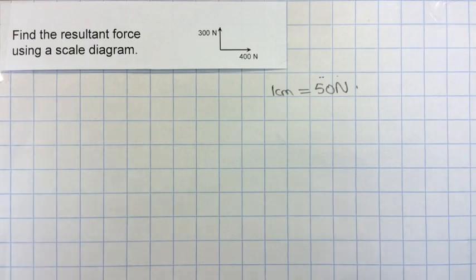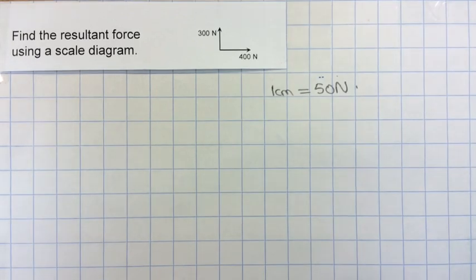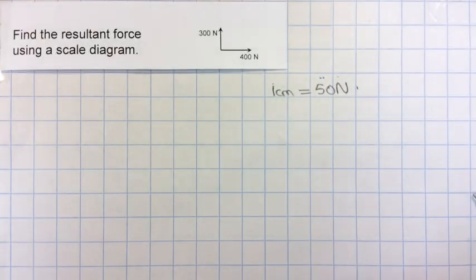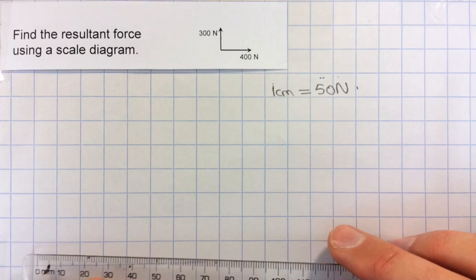So there are two choices for the way that you can do this. The first is the tip-to-tail method, and the second is the parallelogram, or in this case, rectangle. So I'm going to demonstrate the tip-to-tail method.